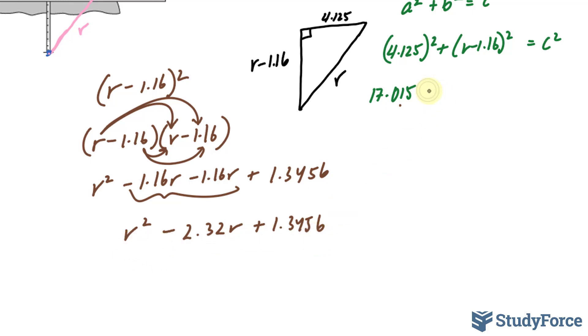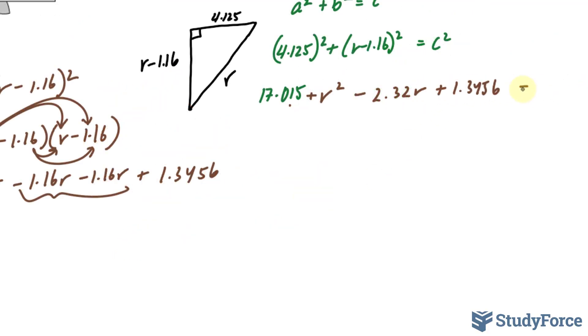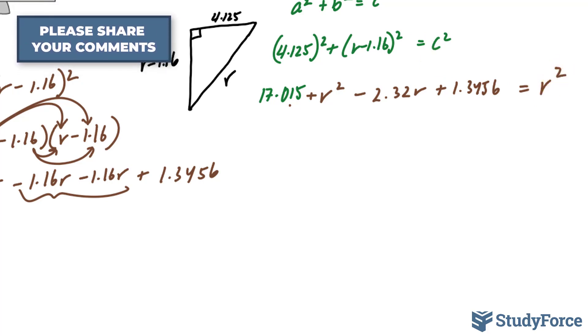Now I'll take this expression and place it over here. Is equal to c, which I'll replace with r squared. Now since we have an r squared on the left side and one on the right side, if you move this over, they will cancel out.